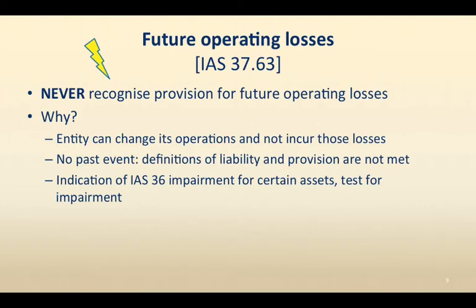Now we are at future operating losses. We never recognize future operating losses. Why? Because the entity can change its operations and not incur those losses, and there is no past event. Therefore, the definition of a liability under IAS 37 is not met, because you have not yet had those losses — it's only expected in the future. However, future operating losses can be an indication of IAS 36 impairment for certain assets.